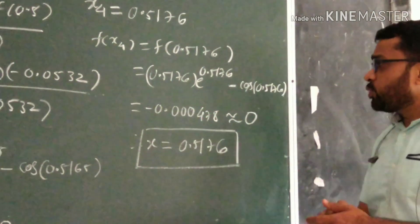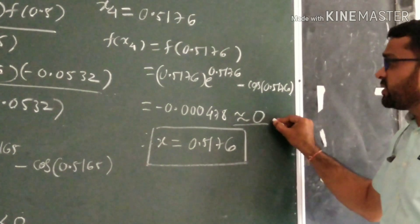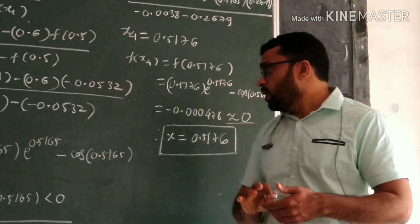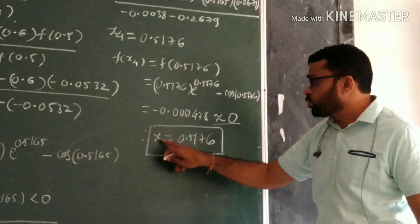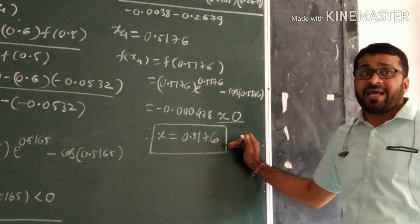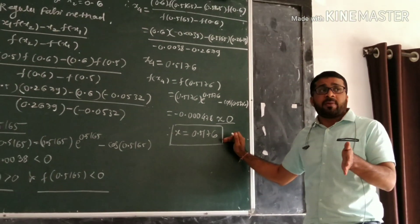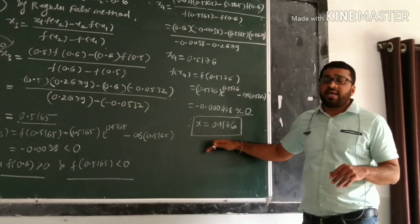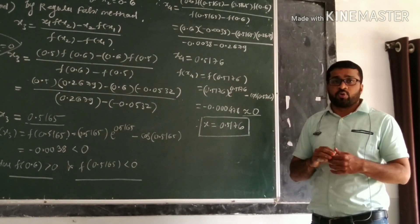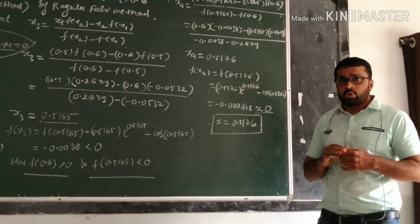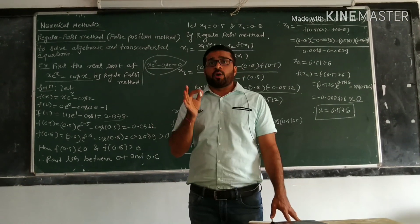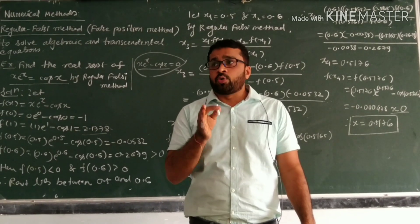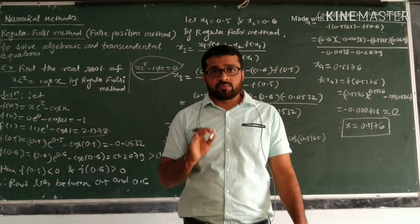This quantity we assume is nearly equal to zero because it's decimal point 3 zeros. So our answer will be x = 0.5176. This is not the exact answer, it's called an approximate answer. This is the exact answer for that particular equation xe^x = cos(x). So this way we solve the example on Regula-Falsi method. Regula-Falsi method is used to find the root of algebraic and transcendental equations.